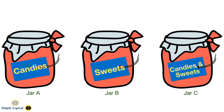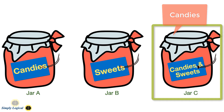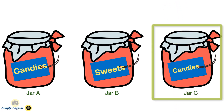Let me explain the solution step by step. In step 1, pick only one item from jar C. Suppose the item is a candy — then jar C contains candies only, because all jars are mislabeled, so this jar cannot contain sweets. The only valid option is candies. Most importantly, this single pick is enough to correctly label the other two jars as well.